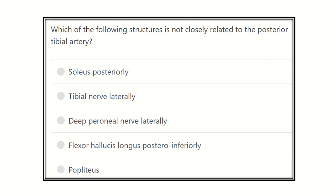First of all, read the question very carefully: which of the following structures is not closely related to the posterior tibial artery? This is a short-type question. We have to first find out the location of the posterior tibial artery and the structures which lie close to it, then it will be very easy to find the option which is not closely related.